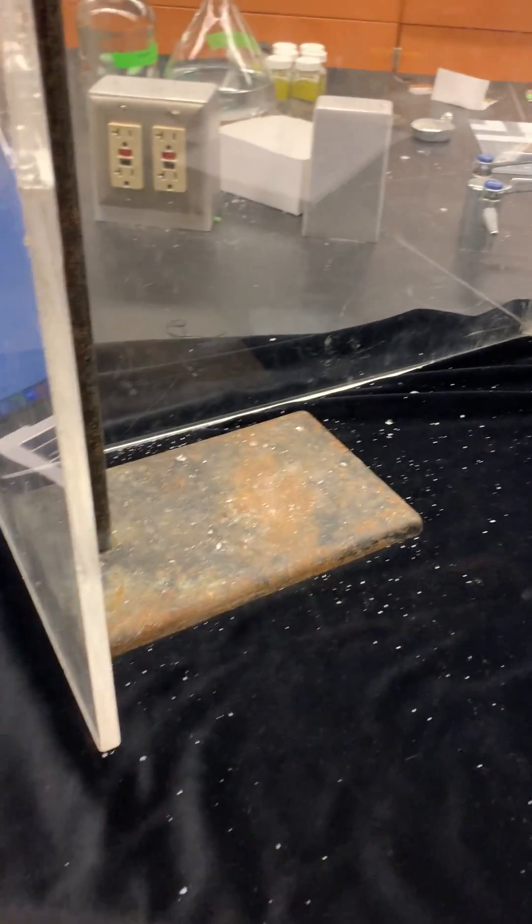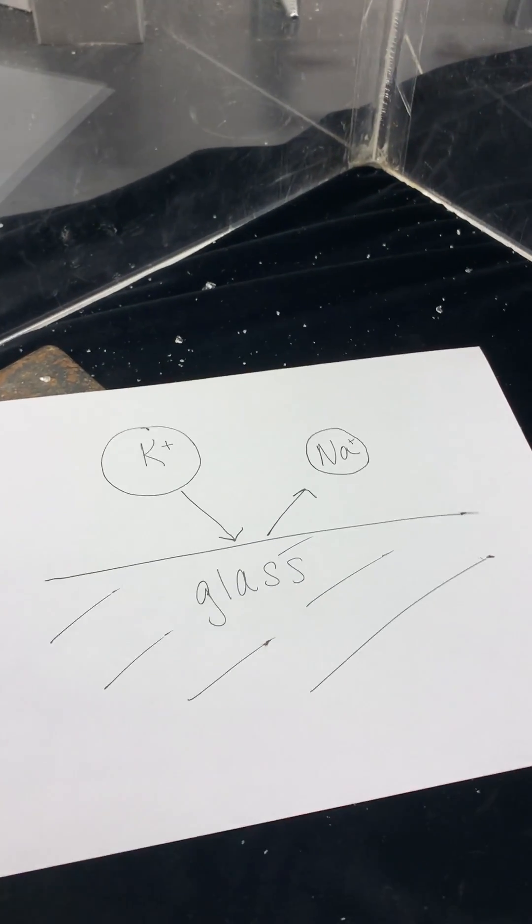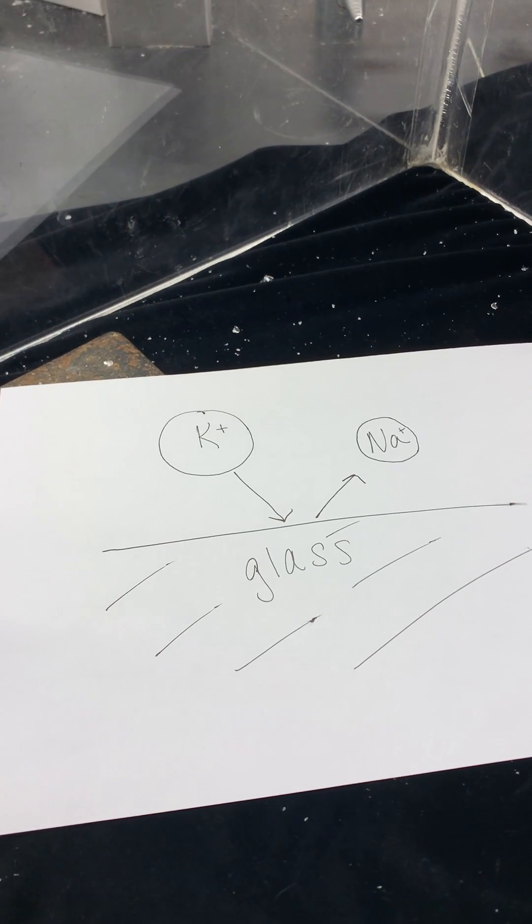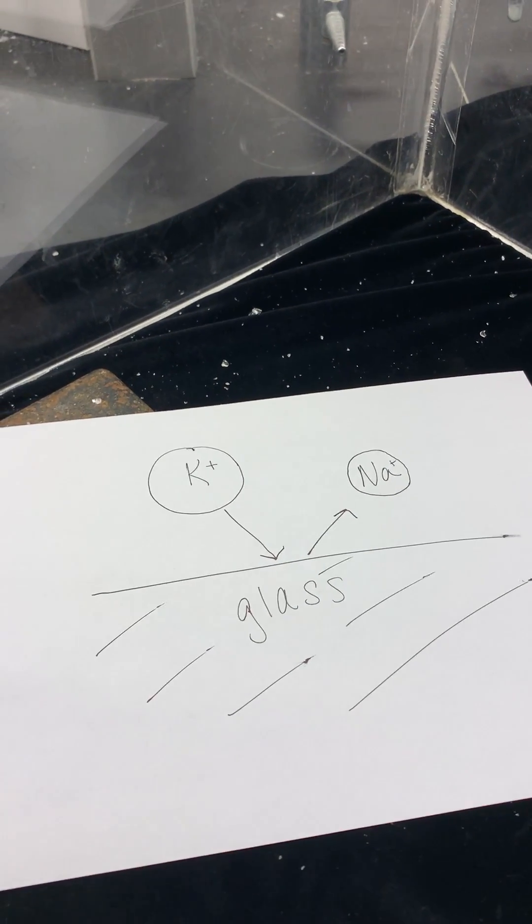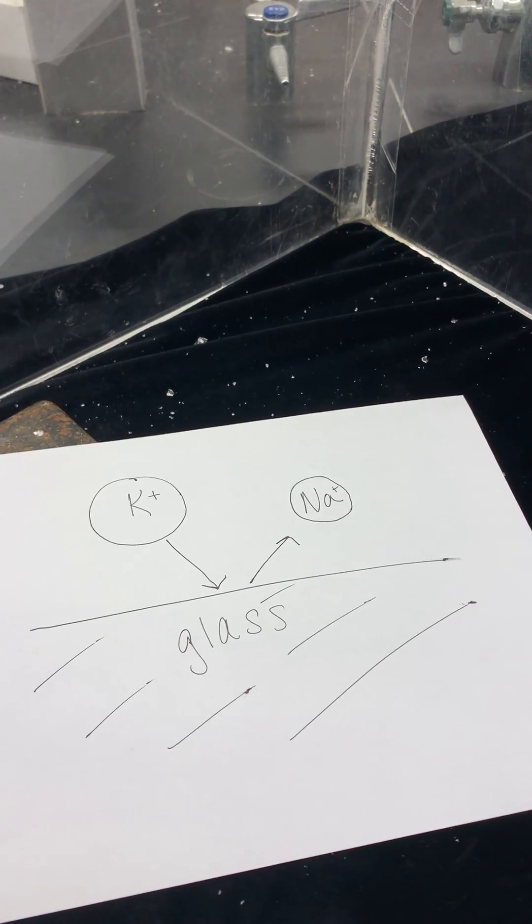This can also be applied to a material called Gorilla Glass. In Gorilla Glass, the glass is placed in a hot salt bath where the small sodium ions leave and the large potassium ions replace them to create a layer of compressive stress on the surface as the potassium ions take up more room and are pressed together.